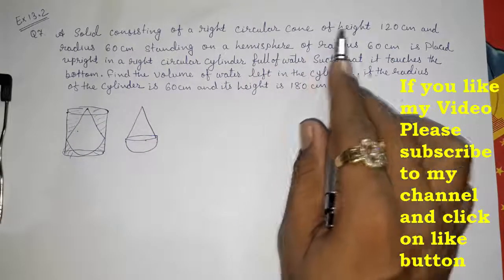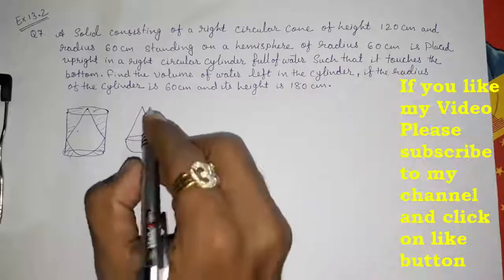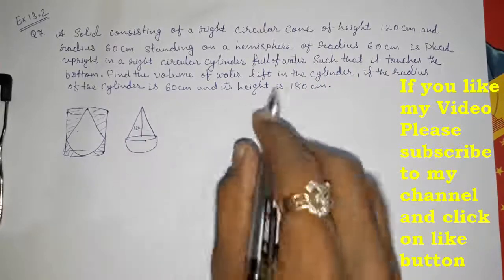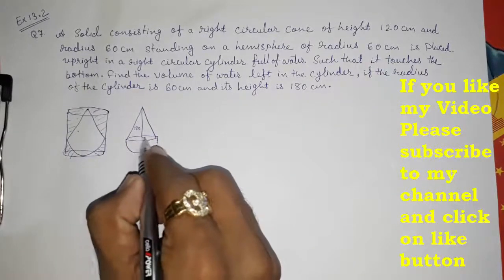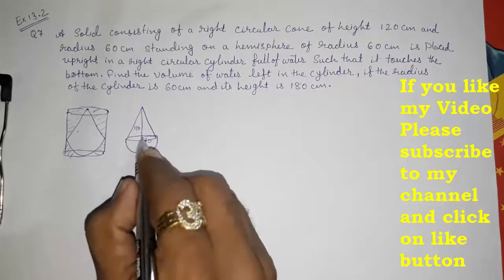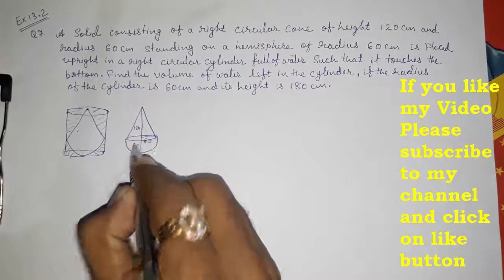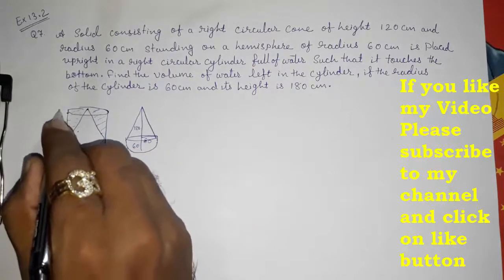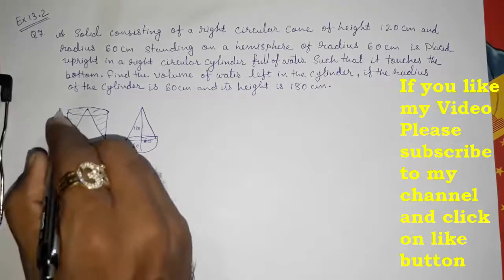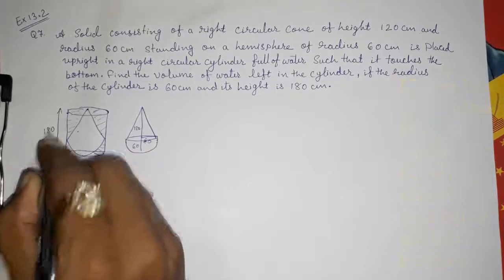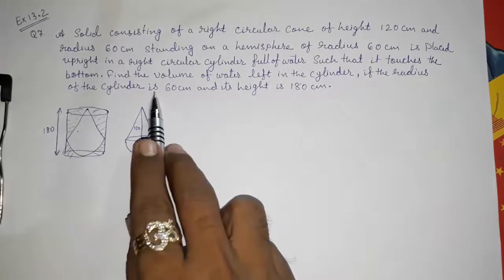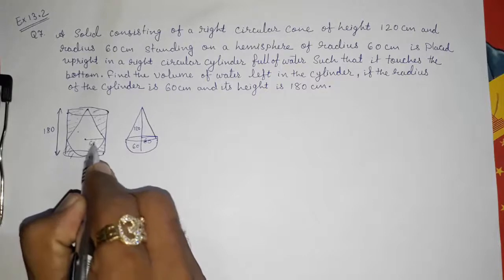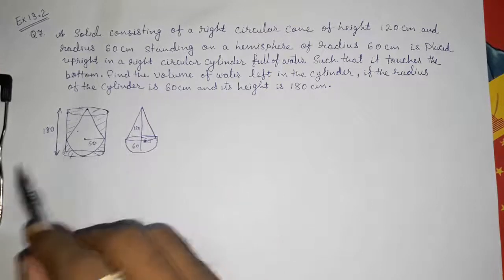They have given us: cone of height 120 cm, radius 60 cm. The hemisphere radius will also be 60 cm. So the total height of the cylinder will automatically be 180 cm, and the radius of the cylinder is also 60 cm.